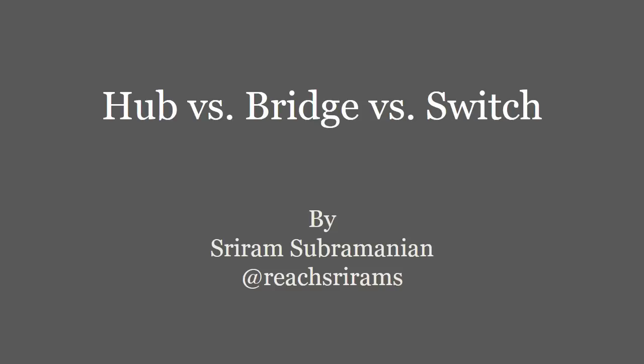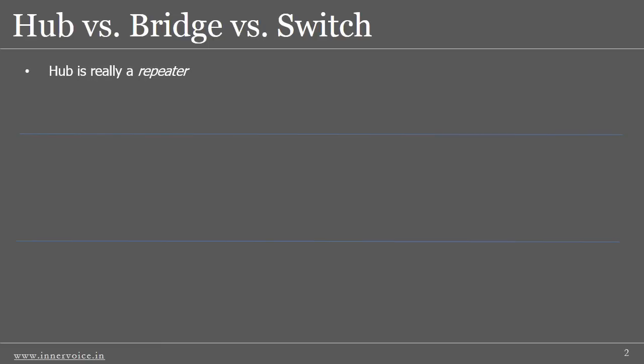Hi everyone, welcome to this short presentation on the differences between a hub, a bridge, and a switch. A hub broadcasts an entire network frame to all its ports. This broadcast is done by repeating the electrical signals of the incoming packet, therefore a hub is really known as a repeater.